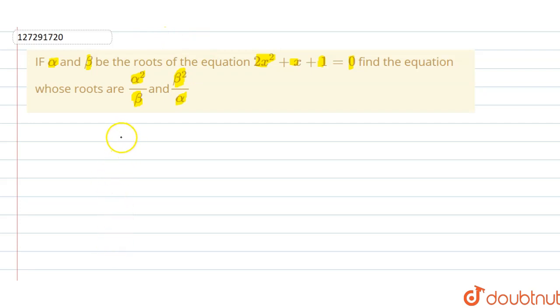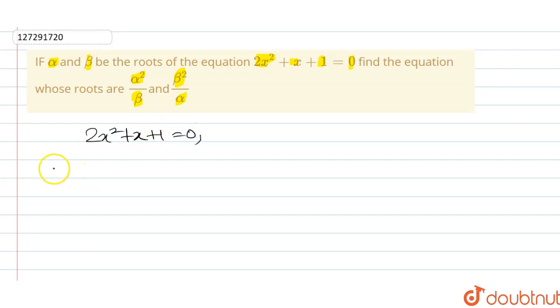So at first, what happens in the equation? In the equation we have 2x squared plus x plus 1 equals to 0. So we have to compare this with ax squared plus bx plus c equals to 0.